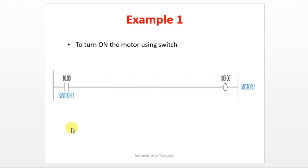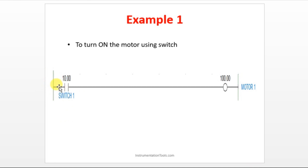Let's see one example for the ladder logic — to turn on a motor using a switch. I am using one switch and connecting one motor to it. I am using a normally open contact here. Why? Because I want to turn on a motor by using a switch — if I disturb the switch, the motor has to turn on. Power is here: 24 volt. This is plus, this is minus. Initially, normally open contact will not allow the power to flow from left to right. If you disturb the switch, it will allow the 24 volt to get in, so it will reach our output and make our motor turn on. This is the simplest example to understand the normally open contact.